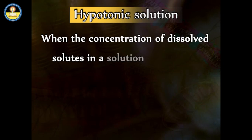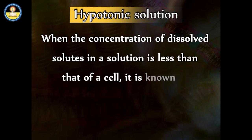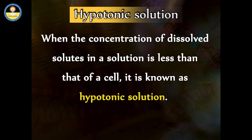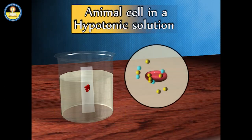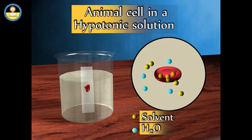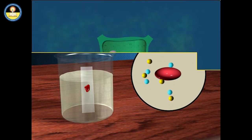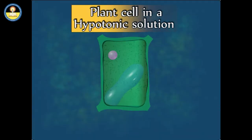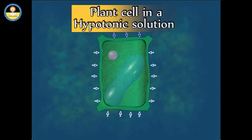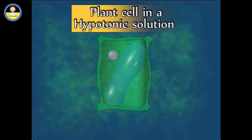When the concentration of dissolved solutes in a solution is less than that of a cell, it is known as a hypotonic solution. An animal cell, when kept in a hypotonic solution, swells up due to inflow of water, becomes bloated, and at times bursts and dies. When plants are placed in water, the water enters the plants through osmosis and fills up the cell to its maximum capacity. A strong cell wall stops the cells from bursting and provides turgidity to the cell.